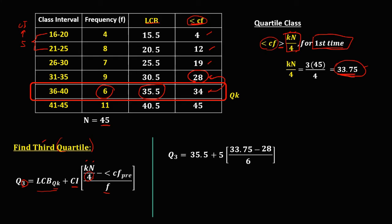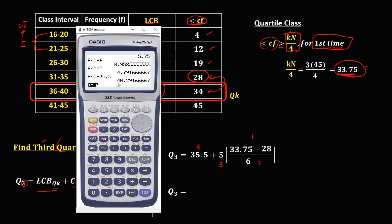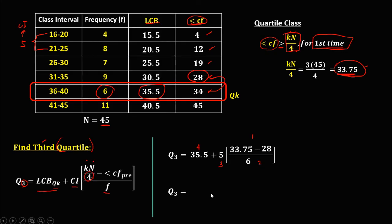Using a calculator to solve for Q3: first, 33.75 minus 28 equals; second, divide by 6 equals; third, times 5 equals; fourth, plus 35.5. So therefore, the third quartile Q3 is equal to 40.29.